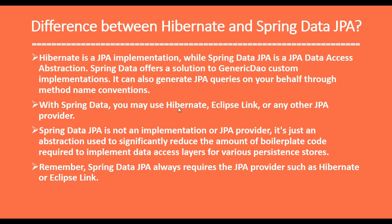With Spring Data you may use Hibernate, EclipseLink, or any other JPA providers. Spring Data JPA is just an abstraction, so that abstraction can have any implementation — EclipseLink or any other JPA providers. Spring Data JPA is not an implementation of JPA nor a JPA provider. It is just an abstraction used to significantly reduce the amount of boilerplate code required to implement the DAO layer for various persistent stores. Remember, Spring Data JPA always requires a JPA provider such as Hibernate or EclipseLink to work.